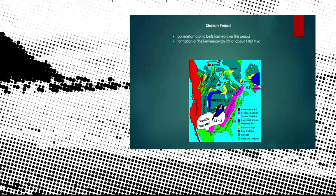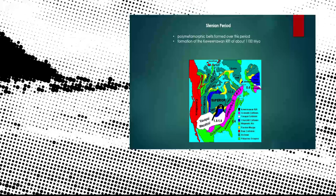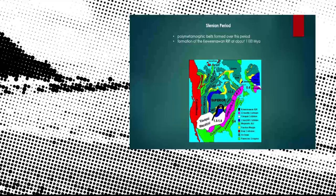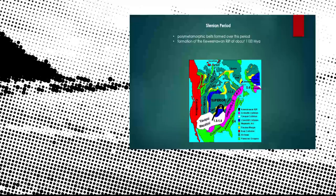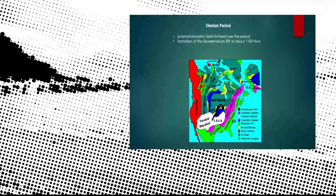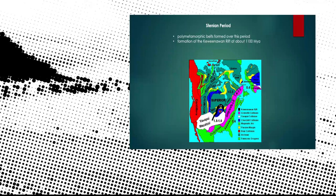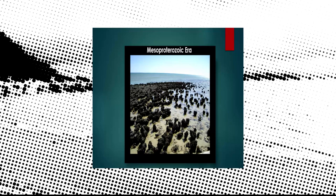And the last period is the Stenian Period. There exist polymetamorphic belts that formed over this period and the formation of the Keweenawan Rift, which started to be created about 1100 million years ago. You could see that rift in the map here labeled in black where it says 1.1.